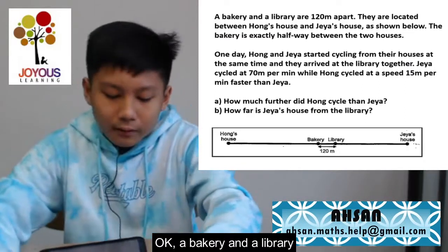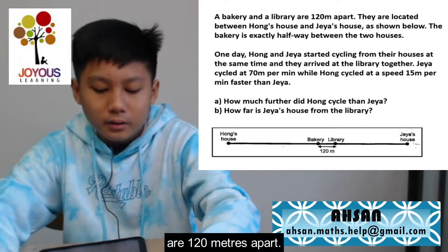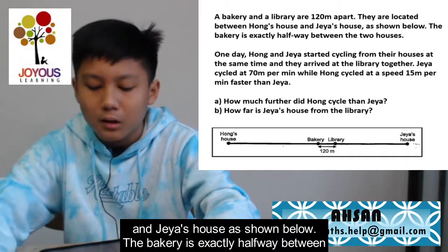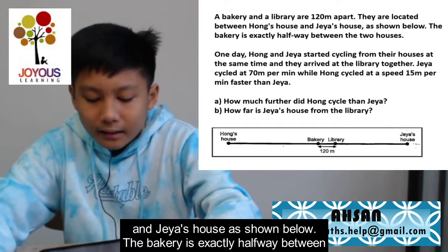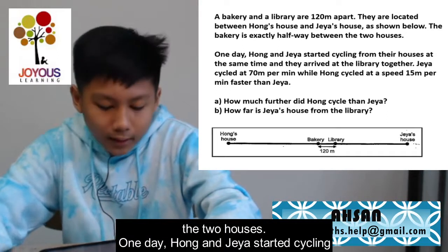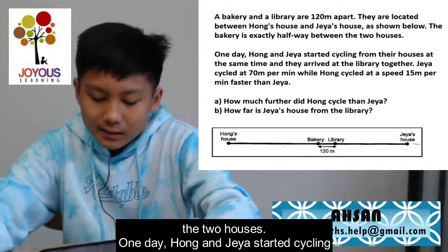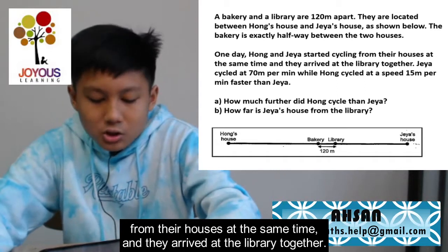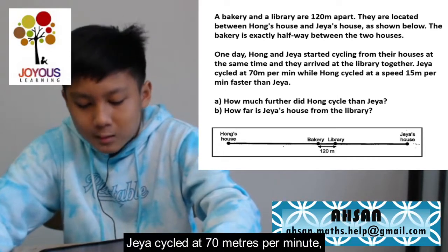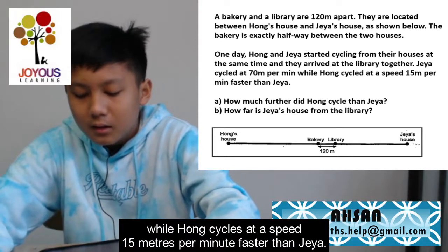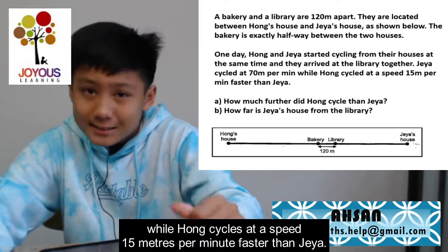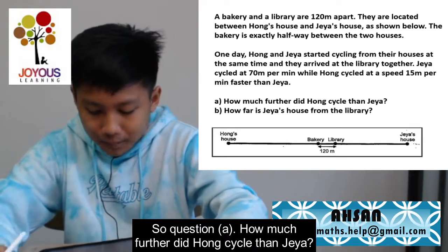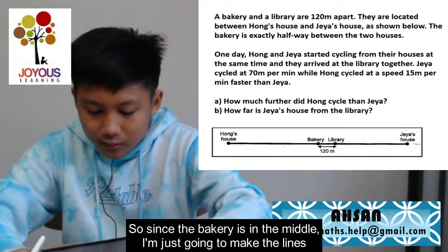A bakery and a library are 120 meters apart. They are located between Hong's house and Jaya's house, as shown below. The bakery is exactly halfway between the two houses. One day, Hong and Jaya started cycling from their houses at the same time and they arrived at the library together. Jaya cycled at 70 meters per minute, while Hong cycled at a speed 15 meters per minute faster than Jaya. Question A: how much further did Hong cycle than Jaya?